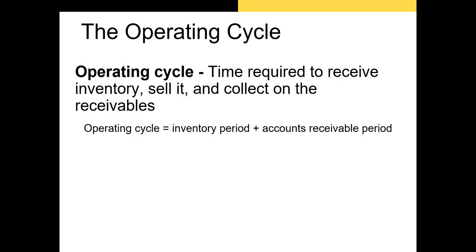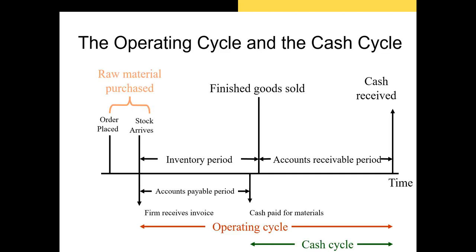We'll start with the operating cycle. The operating cycle indicates the time from which you receive your raw materials until the time that you are paid by your customers in cash. If we can find a way to shorten the operating cycle, we can reduce the amount of debt we need to issue, and we might be able to get better credit terms from our suppliers and use the additional money for capital budgeting projects. Let's walk through the operating and cash cycles.